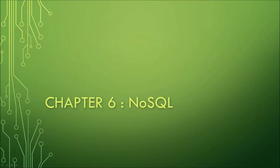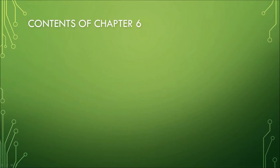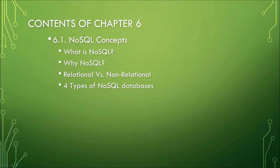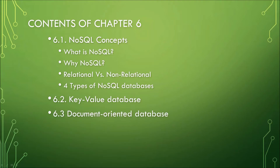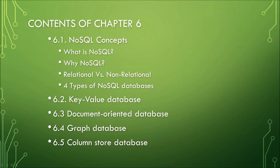Now, all of these previous topics focus on relational databases. In this new chapter, Chapter 6, you will get to understand the concepts of non-relational databases, particularly NoSQL. This chapter is divided into a five-part video series, where the first part is all about NoSQL concepts. The next four parts will discuss in detail the four types of NoSQL databases. We will begin with key-value databases in 6.2, document-oriented databases in 6.3, graph databases in 6.4, and lastly, column-store database in 6.5.